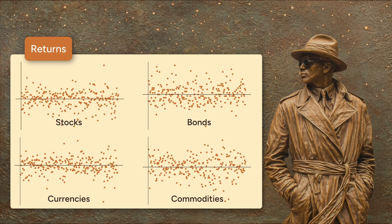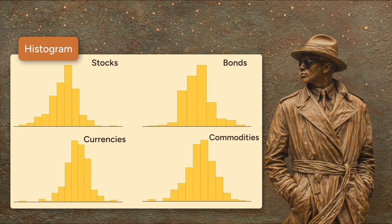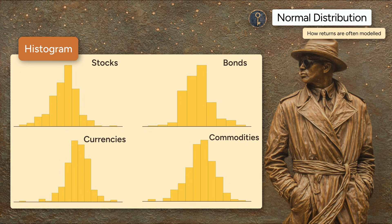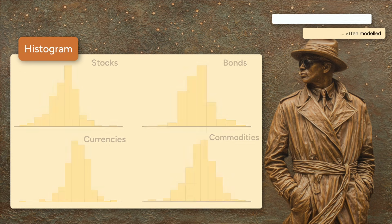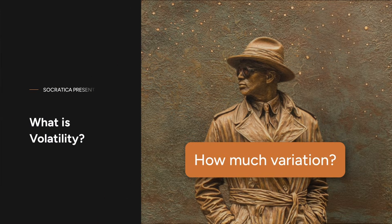When we plot returns, things look a bit chaotic at first, like a jumble of ups and downs. But if we put those returns into a histogram, we see a familiar shape: a bell curve. This is why we often describe returns using a normal distribution. Using this model, we can measure how much an asset tends to vary, and that variation is what we quants call volatility.